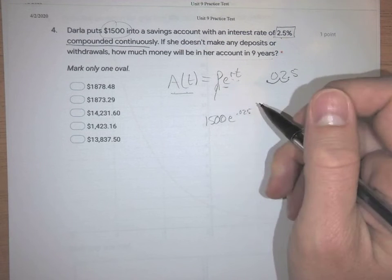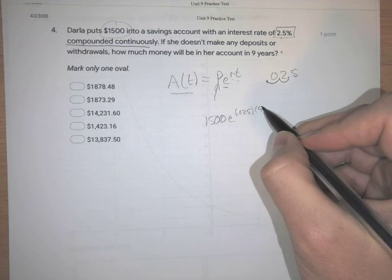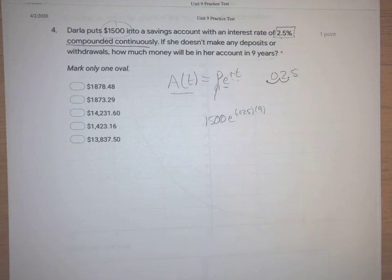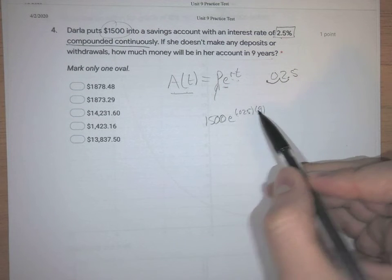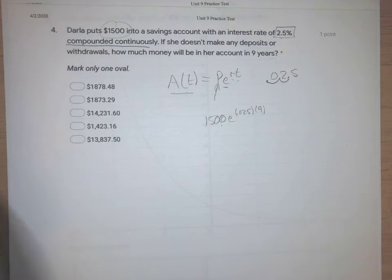We also want to make sure that we multiply this by the amount of time that has gone by, which is nine years. You can do this a piece at a time in your calculator, or you can do it all in one shot. Let's do it both ways.